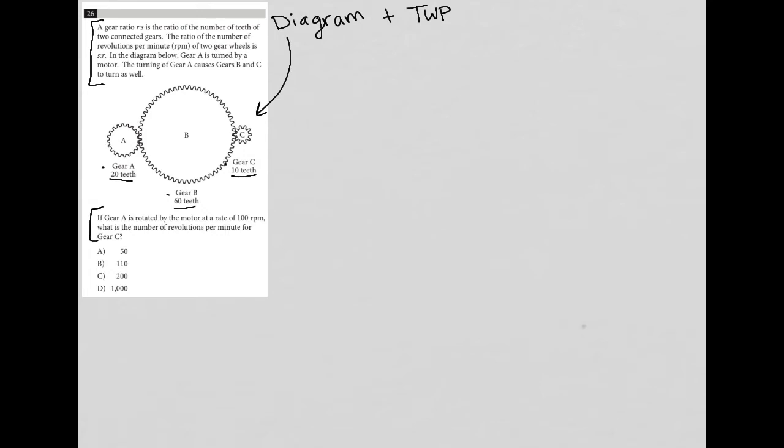Let's get started with reading. The question says a gear ratio, R to S, is the ratio of the number of teeth of two connected gears. So R to S ratio has to do with the number of teeth, and the gears have to be connected. We're looking at these two gears are connected - A connects with B, but then B also connects with C right there.